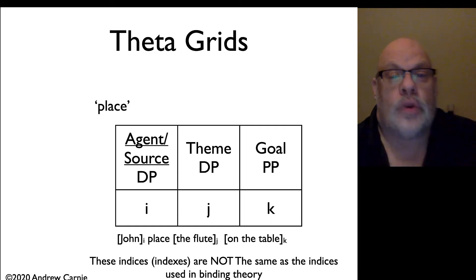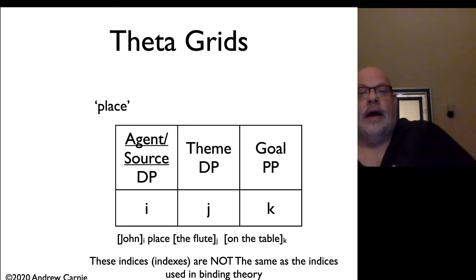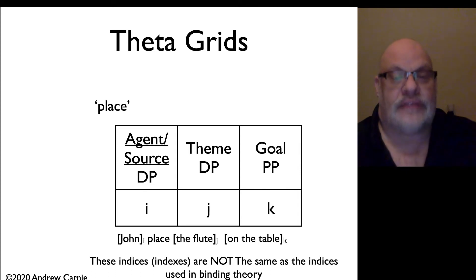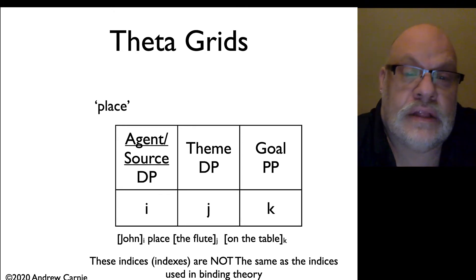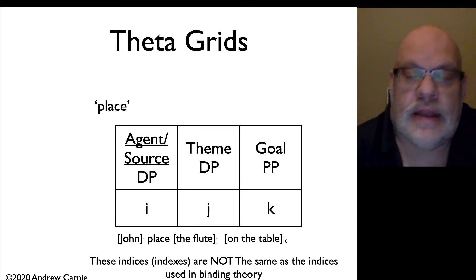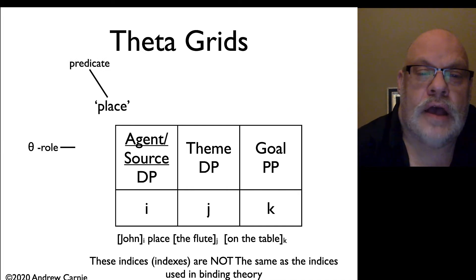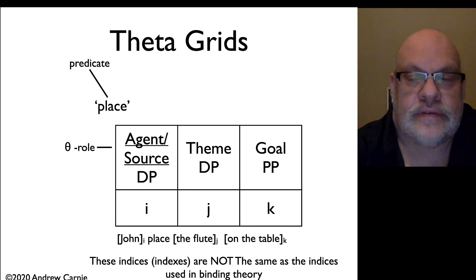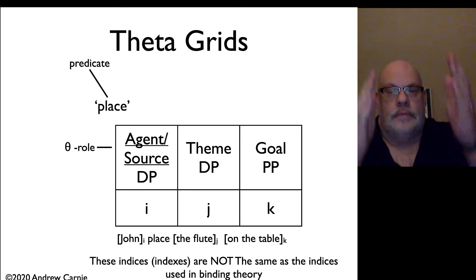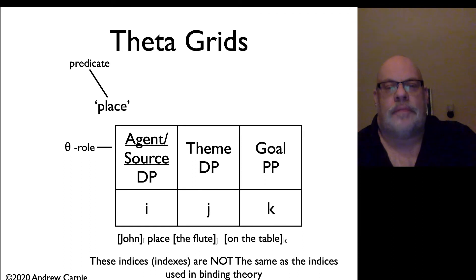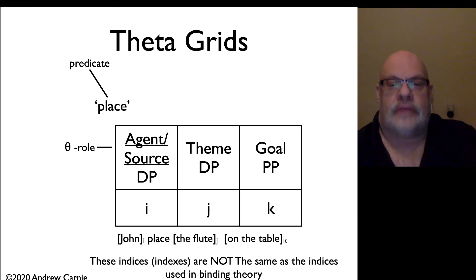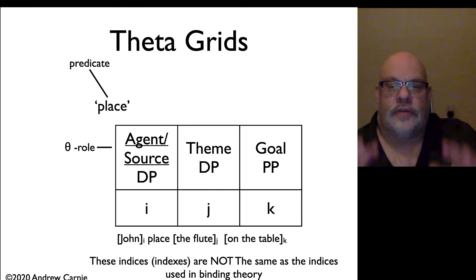How do we code this? We're going to code this in a piece of information stored in the lexical entries of particular verbs. This would be part of the lexical entry for the verb place. It has the following bits: we have the name of the predicate, we have a series of boxes, and each boxed column represents a theta role. So we have the agent theta role as the leftmost box, then we have the theme theta role, and then we have the goal theta role.